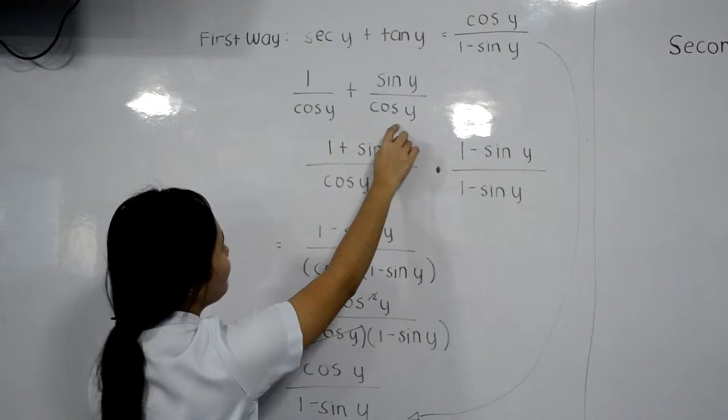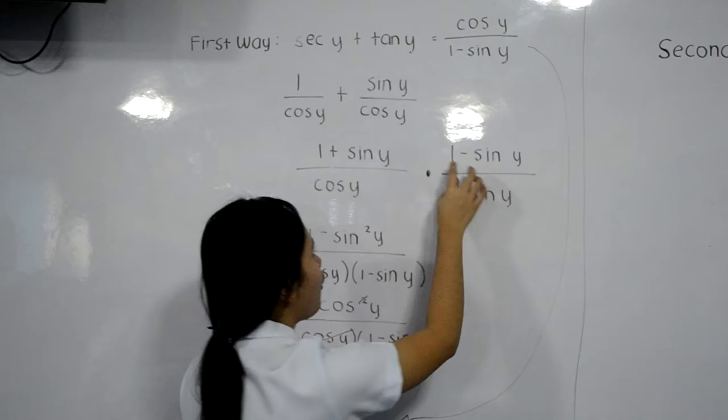Since it is the same denominator, we can combine 1 plus sine y over cosine y, then conjugate with 1 minus sine y over 1 minus sine y.